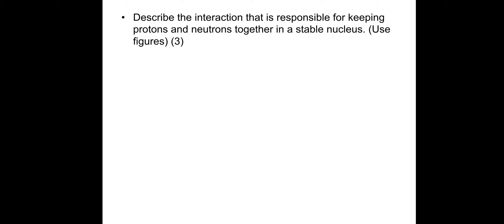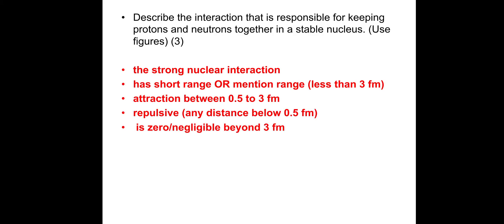So, question here. Exam style question. I want you to describe the interaction that is responsible for keeping protons and neutrons together in a stable nucleus and use figures. So any numbers that you may know. I'm going to give you the answers to this one. So if you haven't finished, make sure you pause. So the interaction is the strong nuclear interaction. It has a short range. I'll mention the range, more specifically with figures. It's less than 3 femtometers. An important point is that it's attractive between 0.5 and 3 femtometers, yet repulsive at distances below 0.5 femtometers to stop the nucleus from collapsing on itself. And then you could also state that it's zero or negligible beyond 3 femtometers. Many exam boards, any number below 10 femtometers. I'd stick with the ones on this page, though, if you can.